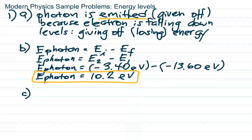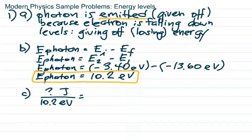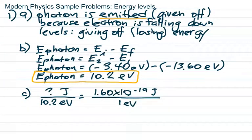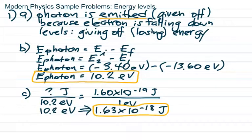Now, part 1C: convert the energy to joules. We need to do this in order to solve for frequency in part D, because E equals hf requires energy in joules, not electron volts. Converting 10.2 eV, given that 1.6 times 10 to the negative 19 joules equals one electron volt — that conversion is on the front page of the reference table. Cross-multiplying gives us 1.63 times 10 to the negative 18 joules.